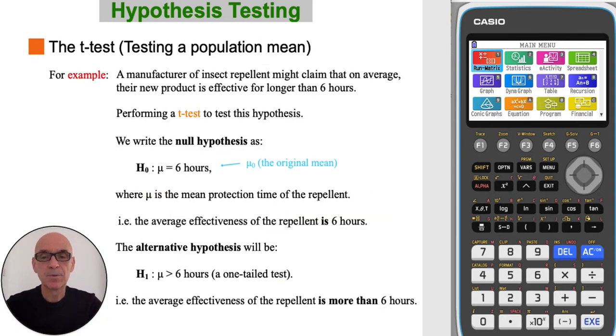For example, a manufacturer of an insect repellent might claim that, on average, their new product is effective for longer than six hours. So, performing a t-test to test this hypothesis, the null hypothesis, H0, would be that the population mean is six hours, i.e. the average effectiveness of the repellent is six hours.